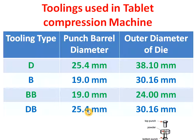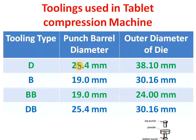For DB tooling, the punch barrel diameter is 25.4 mm, which is equal to the punch barrel diameter of D tooling, and the die diameter is 30.16 mm, which is equal to the outer diameter of the die of B tooling. So DB tooling is a combination of D type tooling and B type tooling — the punch barrel is the same as D type tooling and the die is the same as B type tooling.